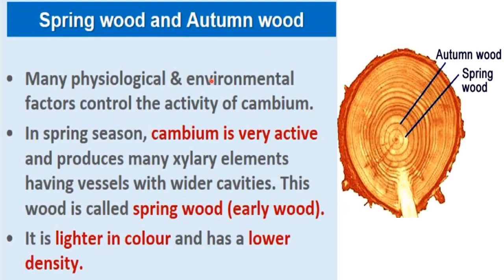Let's start with the different types of wood formed during secondary growth — spring wood and autumn wood. Many physiological and environmental factors control the activity of cambium. You have studied vascular cambium activity in the previous lecture — how it cuts off different cells on its inner as well as outer side to form secondary xylem and secondary phloem. In spring season, cambium is very active.